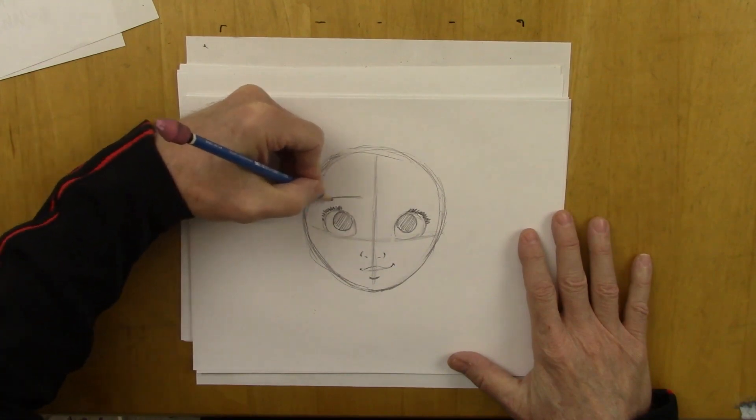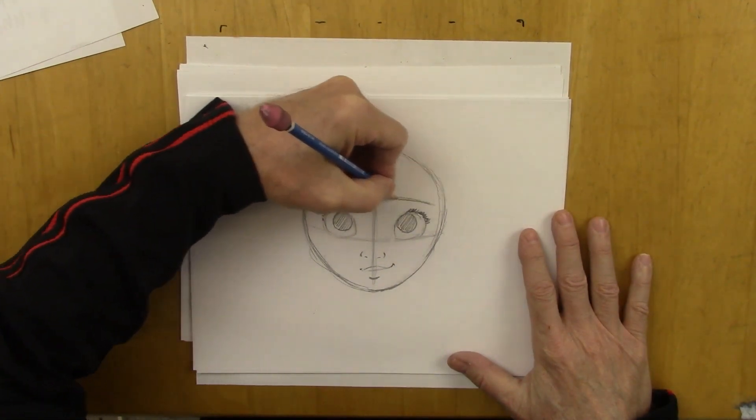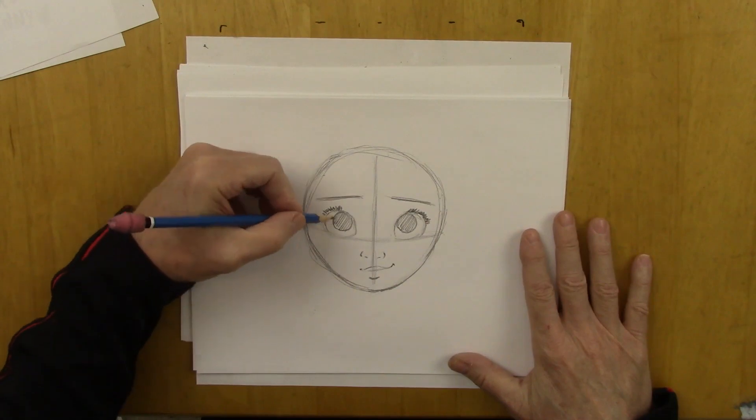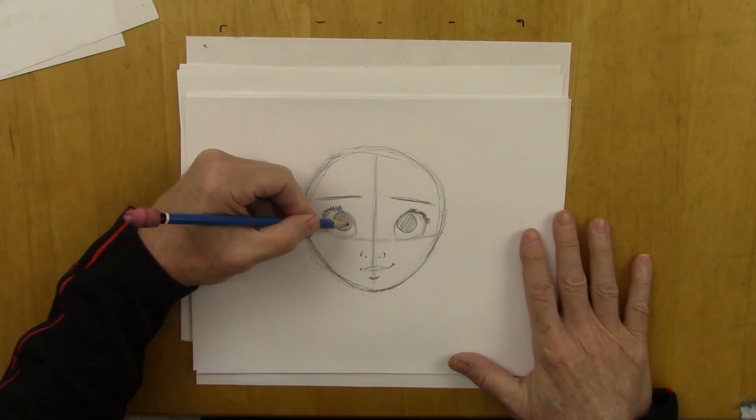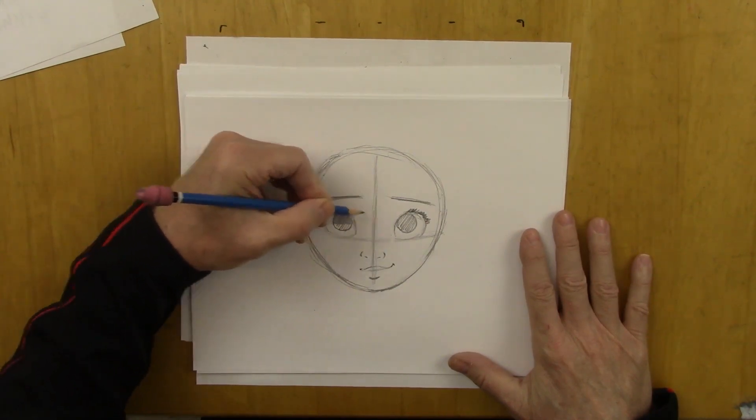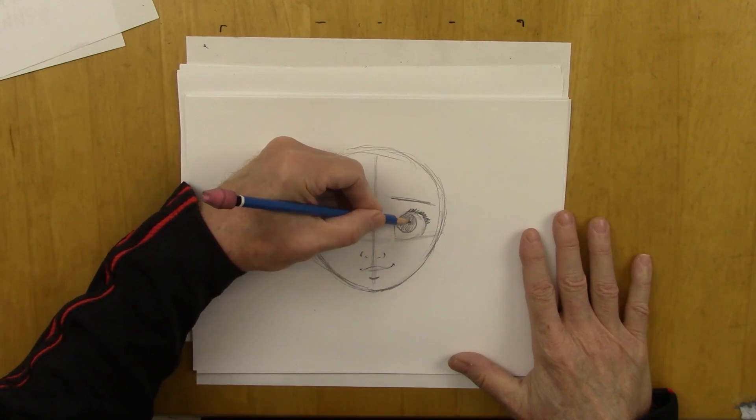And long eyebrows to give some expression. I think it's important to draw and emphasize the eyebrows. Because by making small little eyebrows you just take away one of the tools that you have to add expression.